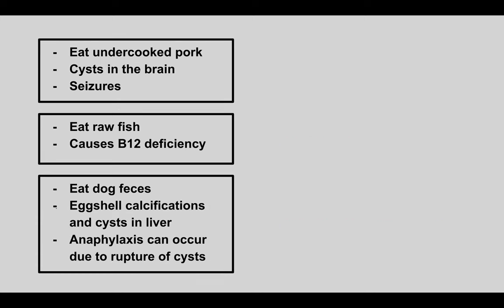The next patient eats undercooked pork and gets cysts in the brain and seizures. This is Taenia solium, which causes cysts in the brain known as neurocysticercosis. The next patient eats raw fish and this causes a B12 deficiency. This is Diphyllobothrium latum.